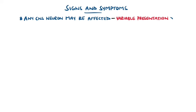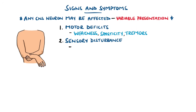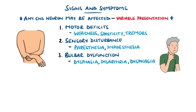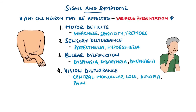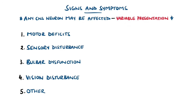The demyelination can happen on any neuron in the central nervous system, so the presentation can be extremely varied. Typical presentations include motor deficits like weakness, spasticity, or tremors; sensory disturbances like paresthesia or loss of sensation; bulbar dysfunction like dysphasia, dysarthria, and dysphagia; vision changes, especially central monocular vision loss or pain on ocular movement; and other features including cognitive impairment, depression, anxiety, and urinary symptoms like urgency, incontinence, or retention.